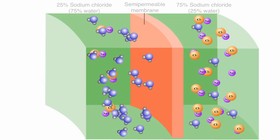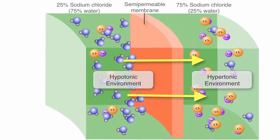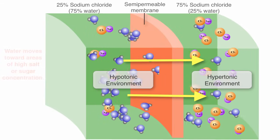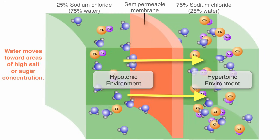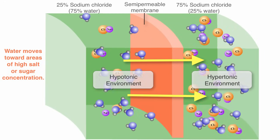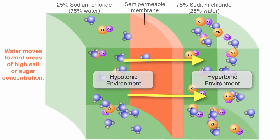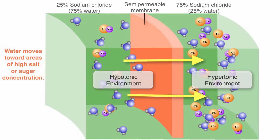An important thing to remember is that osmotic pressure always causes water to move from a hypotonic environment toward a hypertonic environment. In other words, water moves toward areas of high salt or sugar concentrations. This simple process is used to drive the operation of our kidneys and explain some of the physiological consequences of diseases such as diabetes.